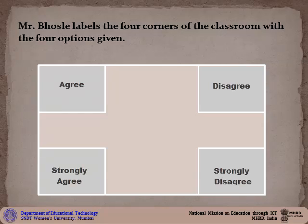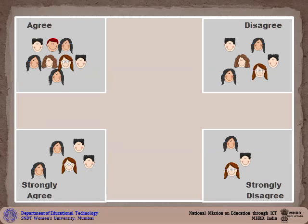While the students are selecting an option and writing a justification, Mr. Bhosle labels the four corners of the classroom with the four options given. He labels one corner as agree, another corner as disagree, and so on. Once the students are done with the writing task, they are asked to get up from their seats and move to a corner denoting their choice.